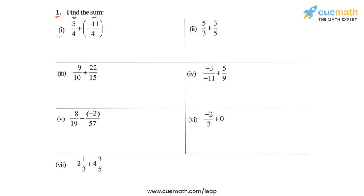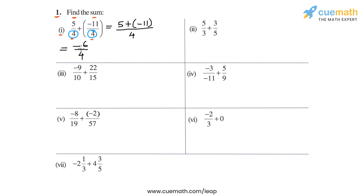Let's start with the first part. We have to add 5/4 and -11/4. These two numbers already have the same denominator 4, so let's simply add the numerators. This gives us (5 + (-11))/4. And 5 + (-11) is -6, so we get -6/4. The HCF of 6 and 4 is 2, so we divide above and below by 2, giving us -3 in the numerator and 2 in the denominator.